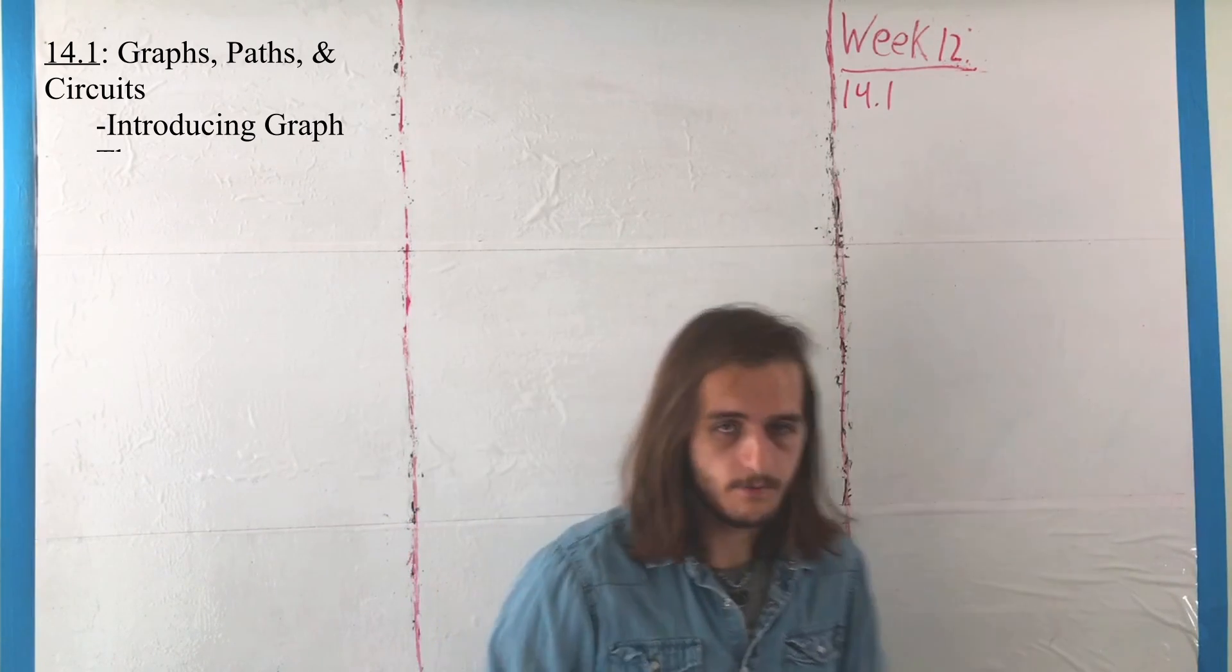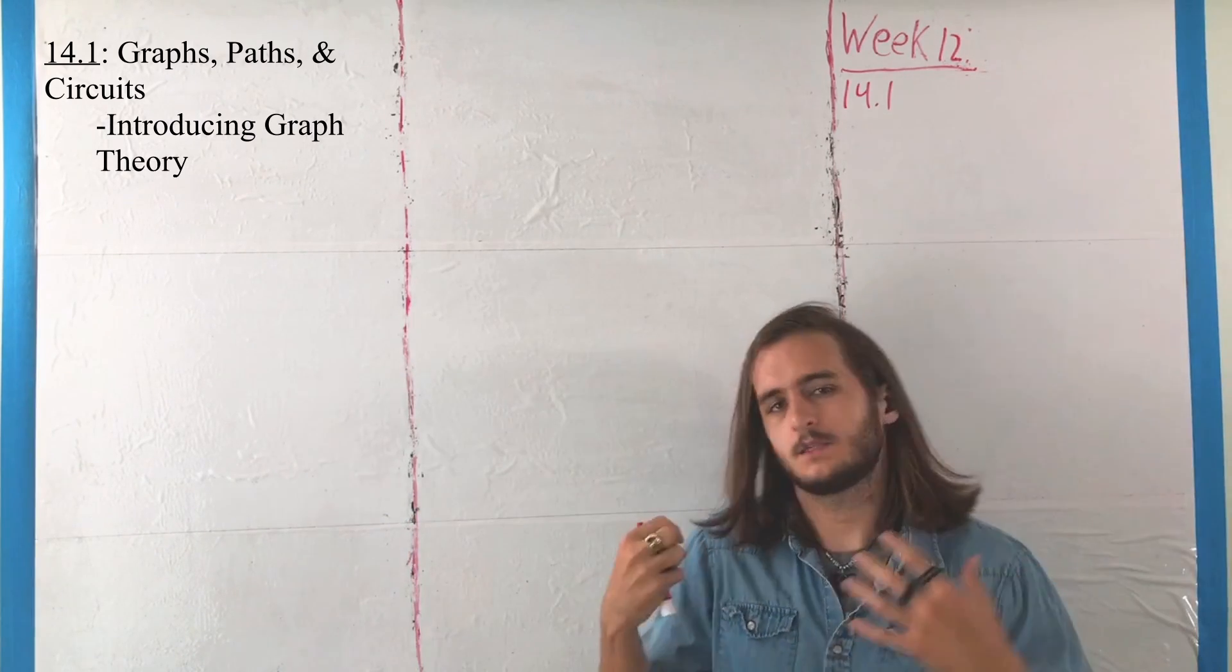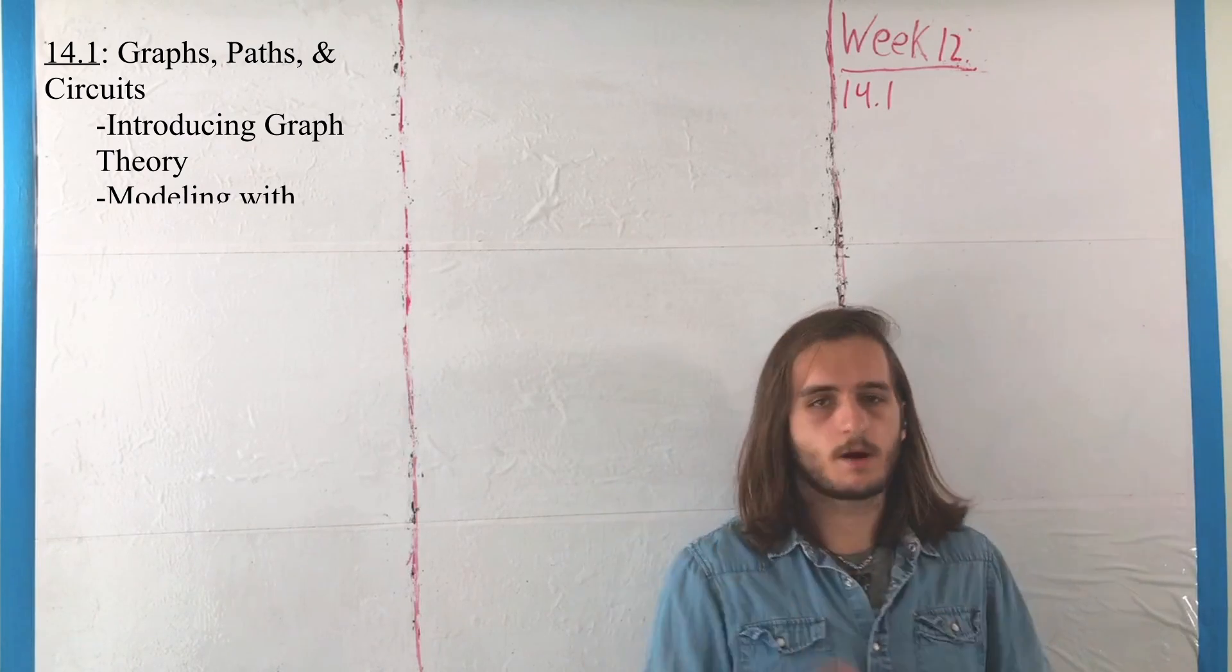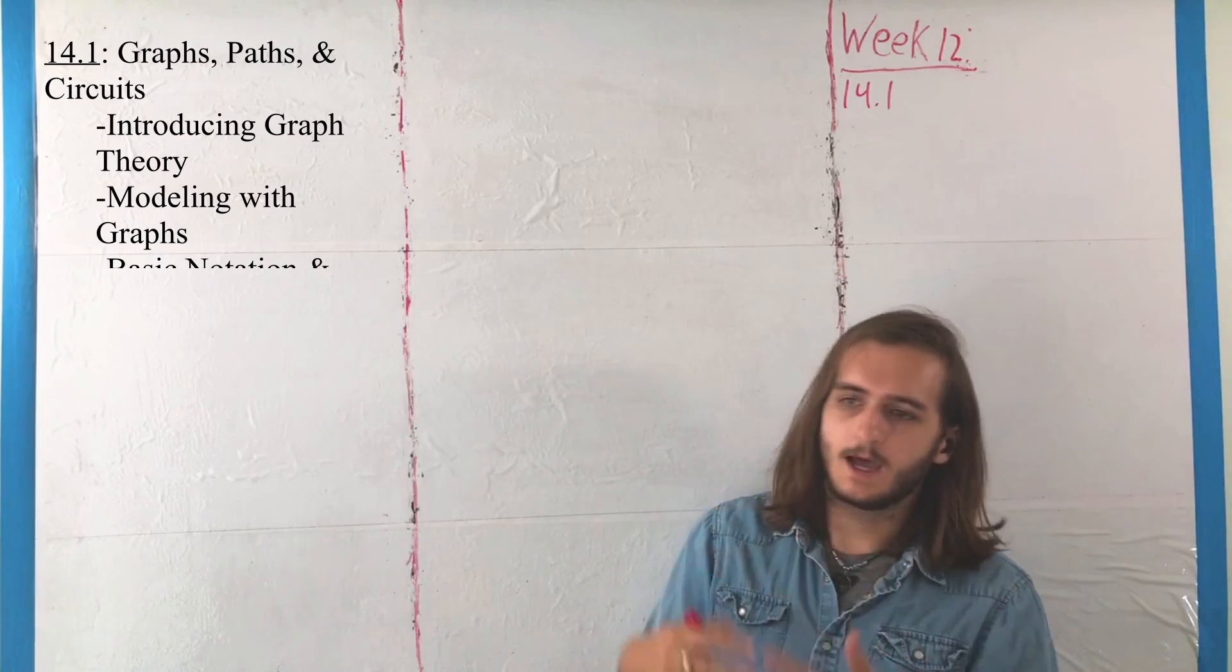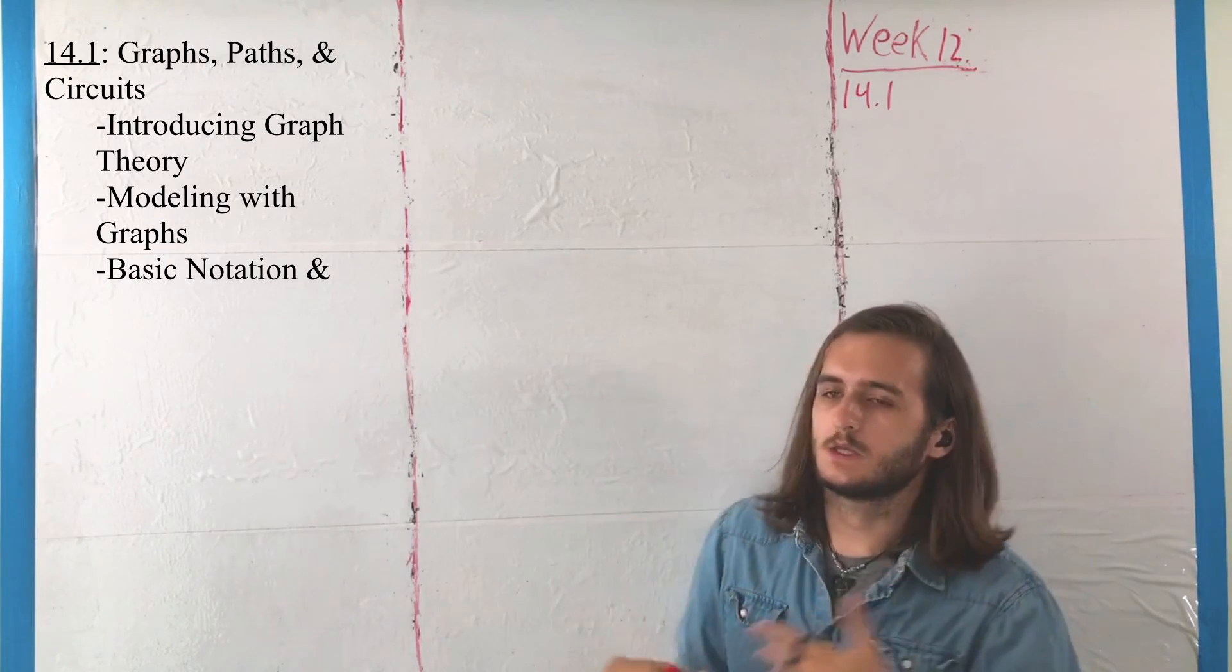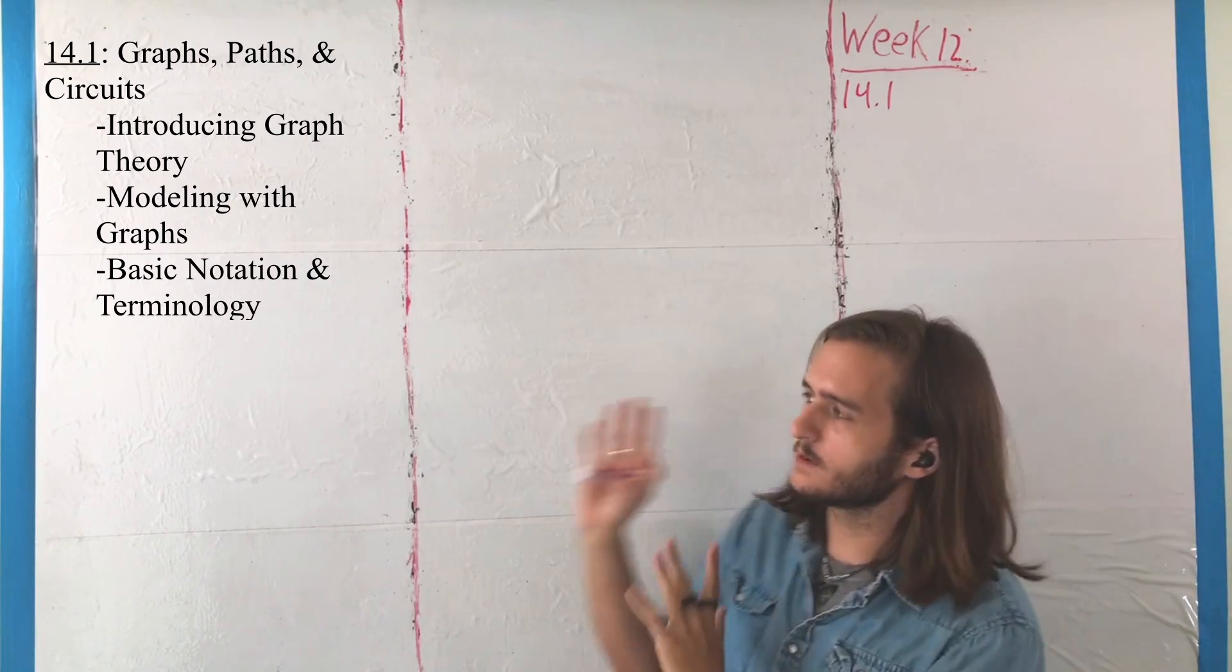We're getting introduced to the idea of what a graph is in this context. We're going to get some rundown of the basic notation here, some of the basic things we can model with graphs, as well as some of the most fundamental structures in terms of things like paths and circuits and what the degree of a vertex is.